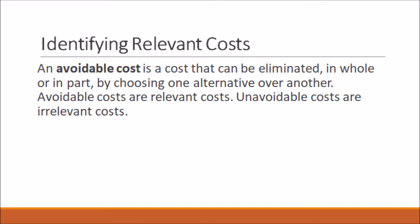While unavoidable costs are irrelevant costs — for example, costs you cannot control such as insurance, depreciation, salaries of top management, and so on. We're going to ignore those unavoidable costs in our alternative decision making.